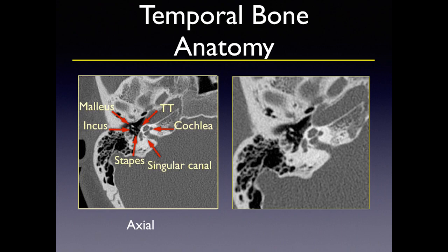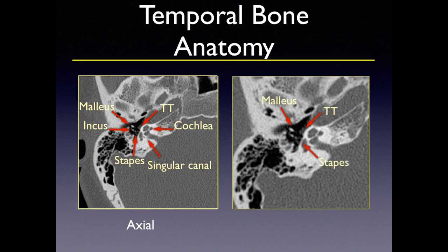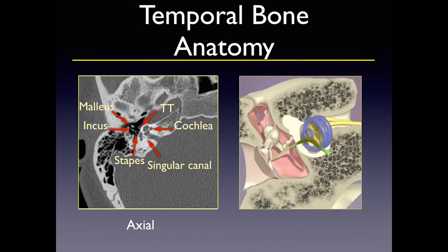In this axial temporal bone CT, we can see the malleus, incus, and stapes — which looks like a little wishbone — along with the tensor tympani. The cochlea is here, and the singular canal allows the vestibular cochlear nerves to innervate the vestibule for balance and localization in space. The cochlea is again visible with the singular canal allowing those divisions of the eighth nerve — the vestibular cochlear nerves — to innervate the vestibule. Here's the malleus, tensor tympani, and stapes heading toward the oval window. The incudostapedial joint must be intact, and we can see the long incus with its small lenticular process connecting right through.